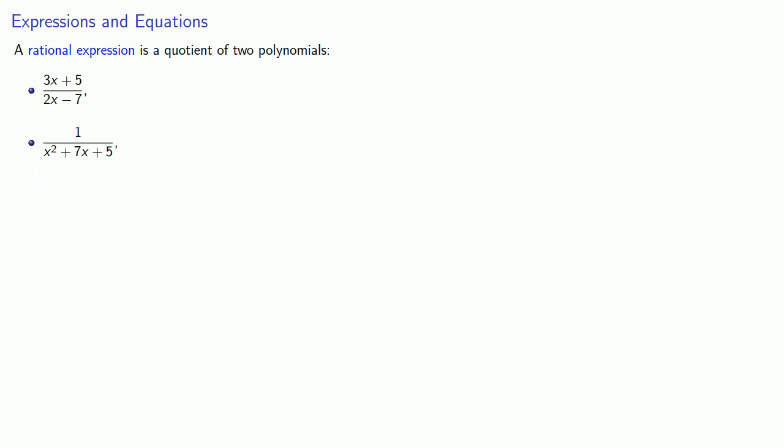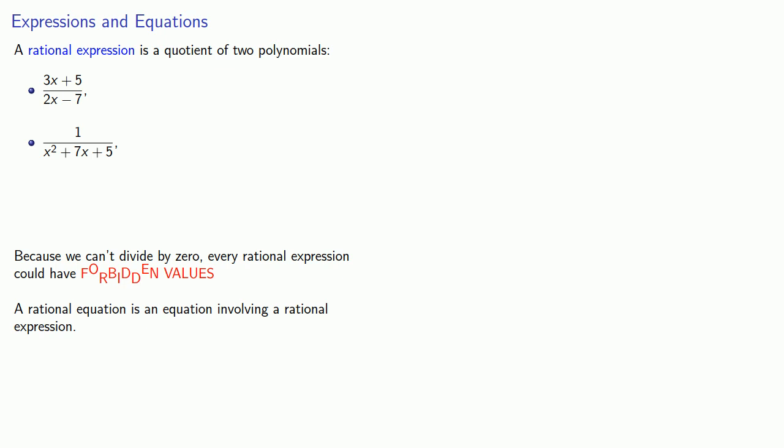Now, the important thing is that since we can't divide by zero, every rational expression could have forbidden values. A rational equation is an equation involving a rational expression. And whenever you have rational expressions, the important thing to remember is to always identify values that make the expression undefined.